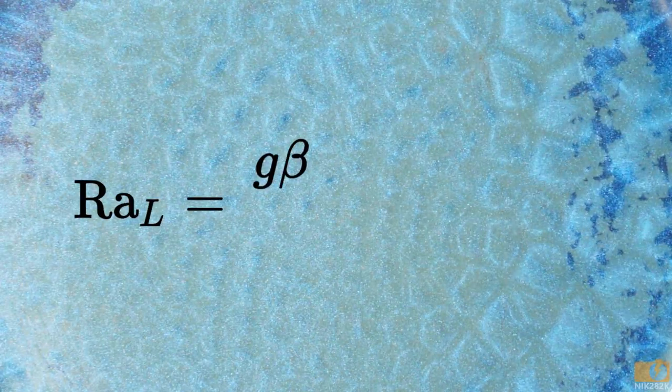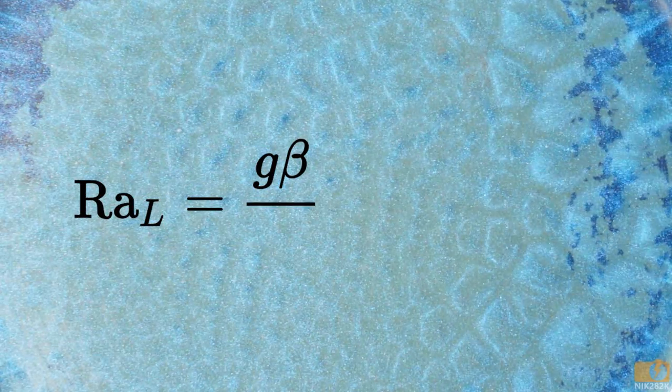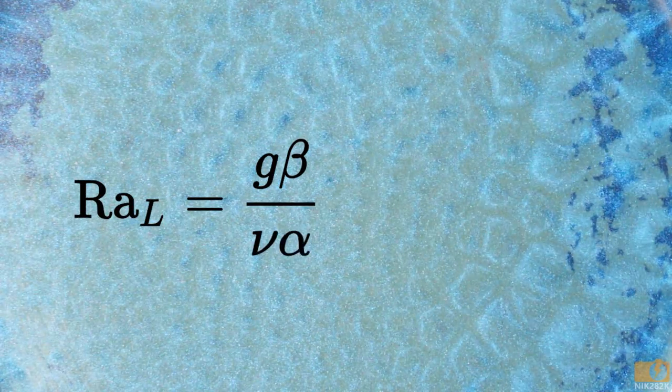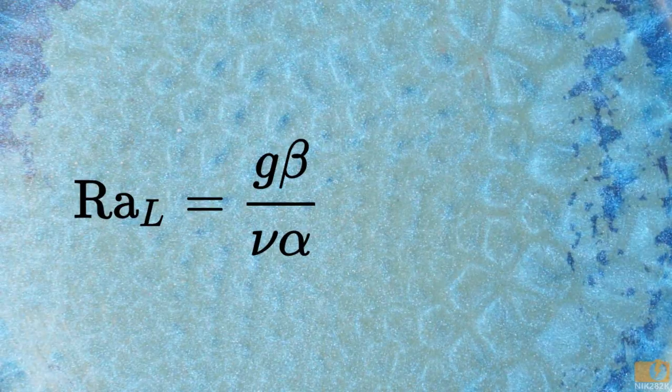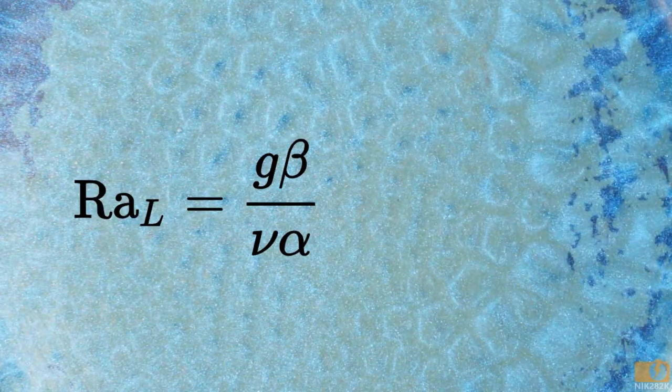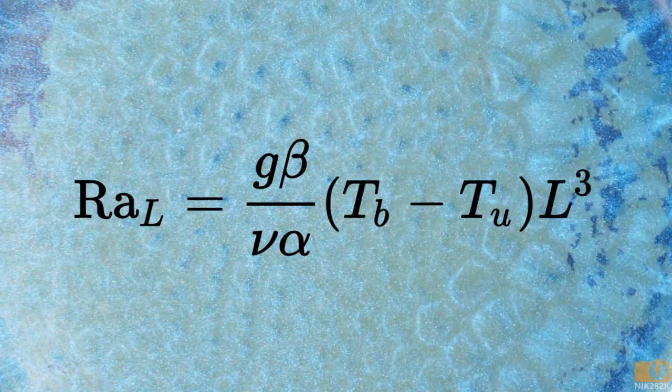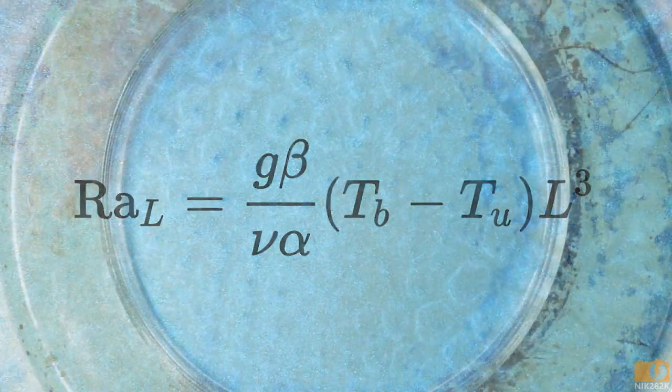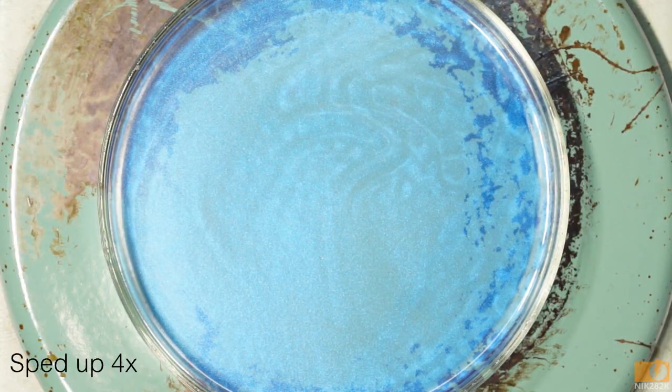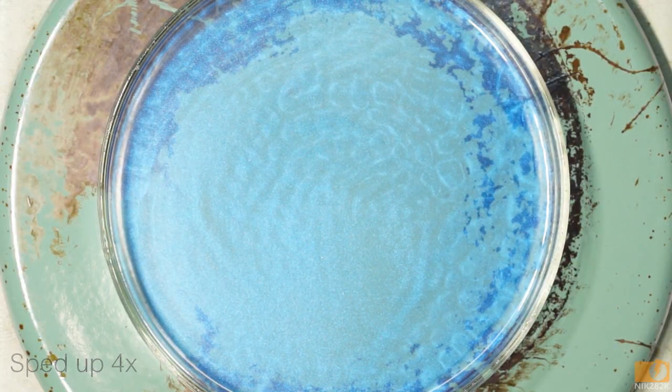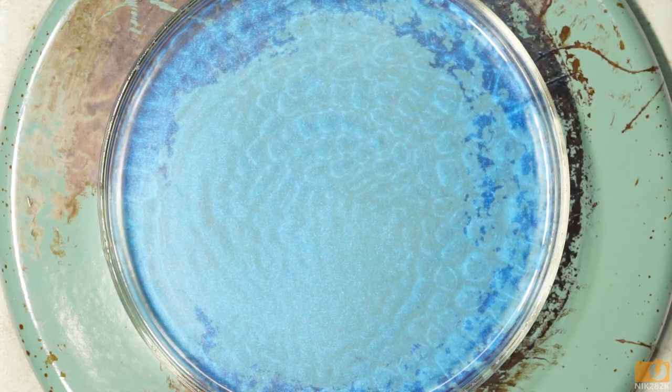Whether or not the bennard cells form is determined by a non-dimensional parameter called the Rayleigh number. The Rayleigh number is the acceleration due to gravity times the thermal expansion coefficient of the oil, divided by the viscosity of the oil times the thermal conductivity of the oil. All of this is multiplied by the temperature difference from the bottom of the container to the top, multiplied by the cube of the height of the liquid column. When the Rayleigh number for the system reaches 1,708, it becomes unstable, and bennard cells can form.